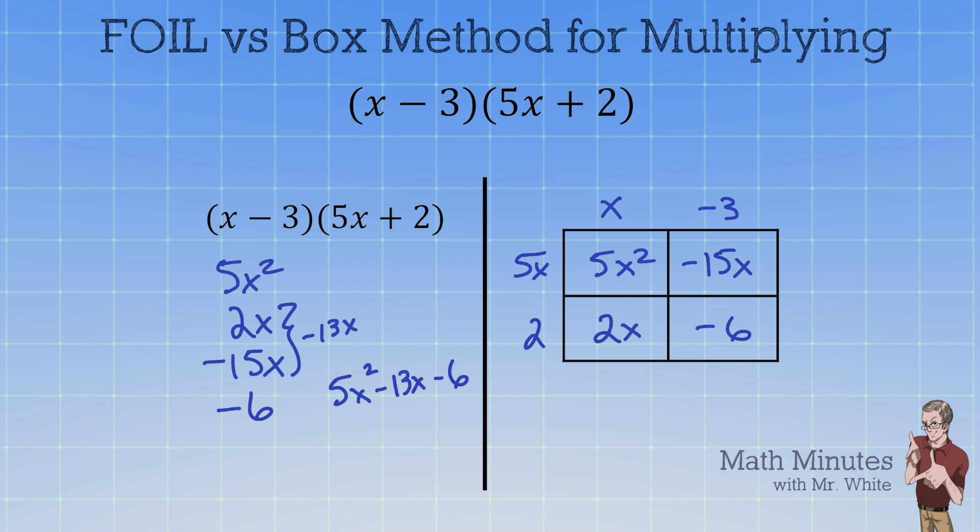And you can see those two middle terms that are diagonal here -15x and 2x can be combined to be -13x. And we bring everything else down and we have the answer. Very nicely organized work.